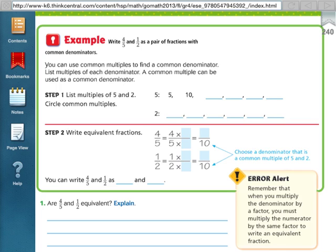Lesson 6.4 is about writing fractions with common denominators. So they're going to give you a fraction and they're going to ask you to write another fraction. They're going to give you two fractions and they're going to ask you to write them with common denominators.